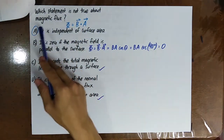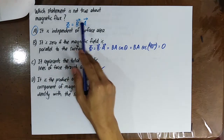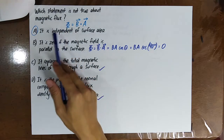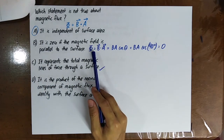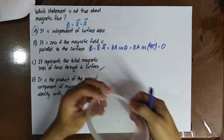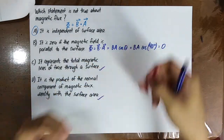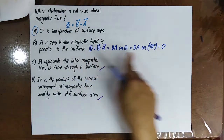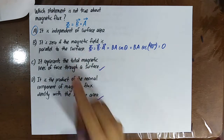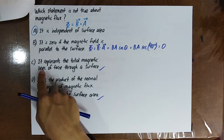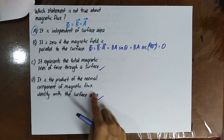Which statement is not true about magnetic flux? Statement: magnetic flux is independent of surface area. Since phi equals B dot A equals B A cos theta, the flux is dependent on surface area, so this statement is wrong. Magnetic flux is zero if the magnetic field is parallel to the surface, because then B is perpendicular to the area vector, the angle is 90 degrees, and cos 90 equals 0. It also represents the total magnetic lines of force through a surface, and is the product of the normal component of magnetic flux density with the surface area.